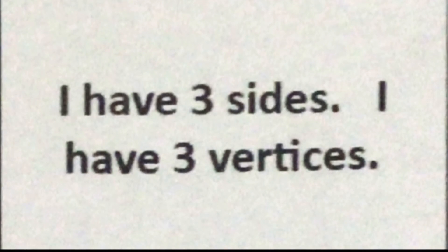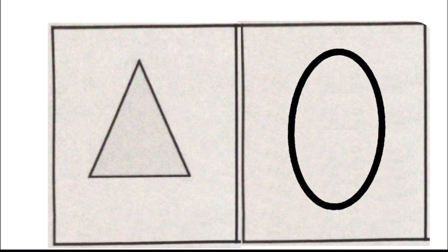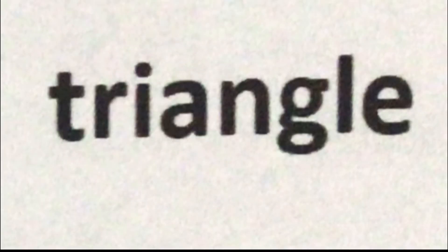The next one is: I have three sides. I have three corners. Your options are a triangle or an oval. The answer is a triangle. Why would it be an oval? Ovals have zero sides. Ovals and circles have zero sides, so it's definitely not that.